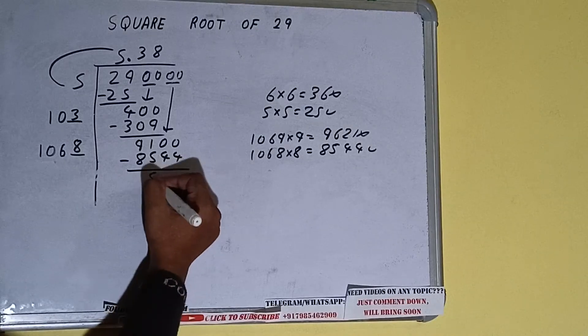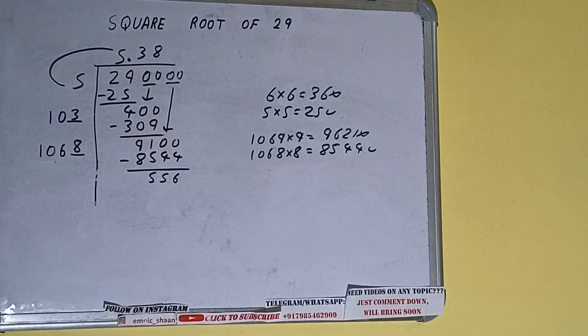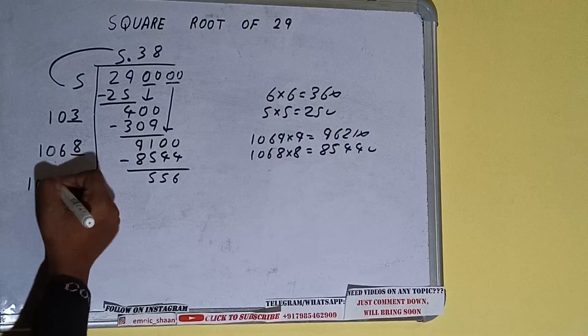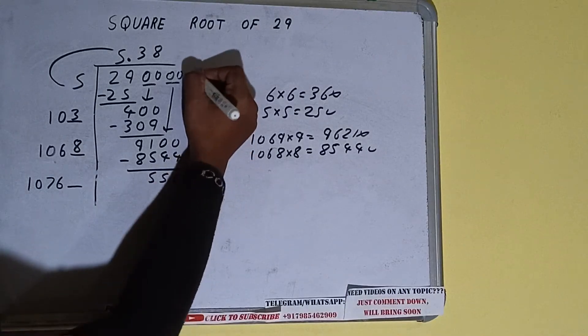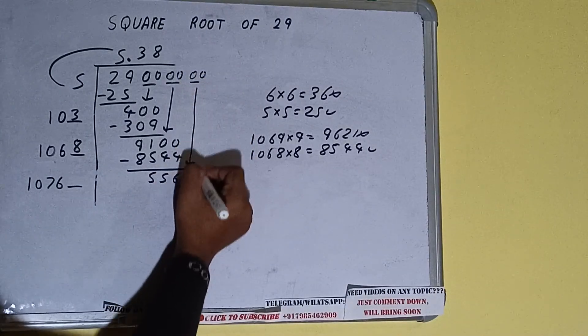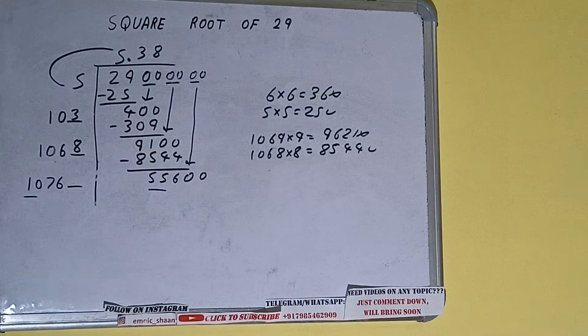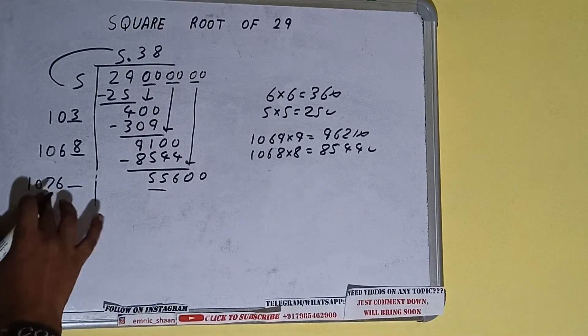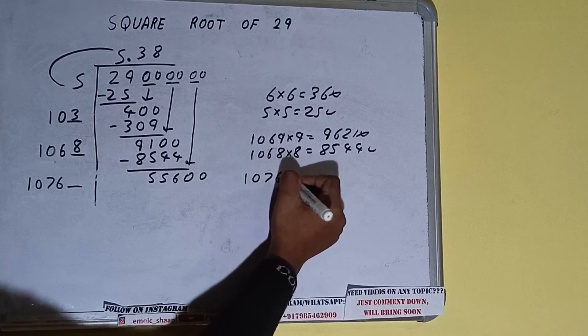And we'll be having 556. Now 1068 into 8 we did, so add both, so 1068 plus 8 will be 1076, and keep a digit extra. And this number we need to make it big so bring the next pair of zeros down and it will be 55600. Now compare this 10 with this 55. So 10, 5 times is 50, right? So we can try 5 times. 1076, 5